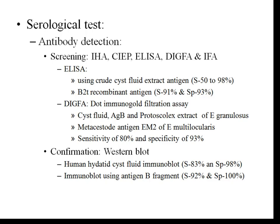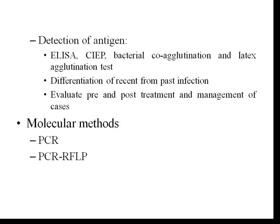When screening test results are inconclusive, confirmatory testing is done. The confirmatory test is Western blot using Human Hydatid Cyst Fluid Immunoblot or immunoblot using antigen B fragments. The Human Hydatid Cyst Fluid Immunoblot has a sensitivity of 83% and specificity of 98%, while immunoblot using the 8–12 kDa antigen B fragment has a sensitivity of 92% and specificity of 100%. One advantage of ELISA is that it can serve as a prognostic marker — if antibody titers fall after surgery, it indicates cure. Antigen can also be detected in hydatid sand or fluid using ELISA, counter-immunoelectrophoresis, bacterial coagglutination, and latex agglutination test.